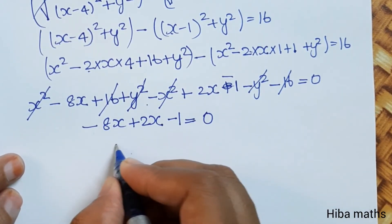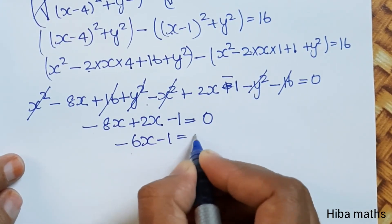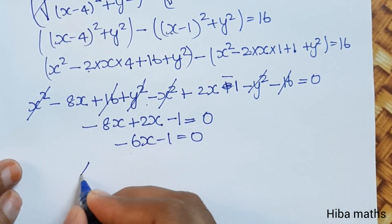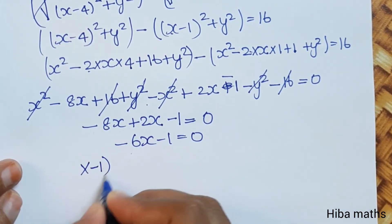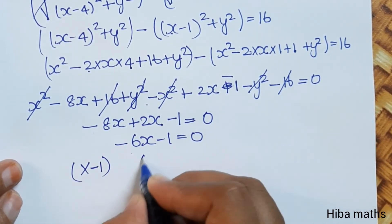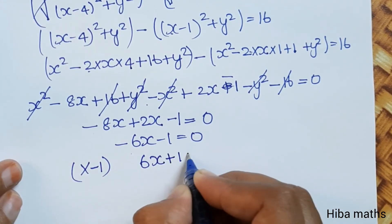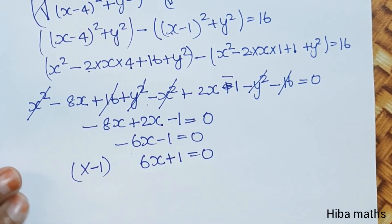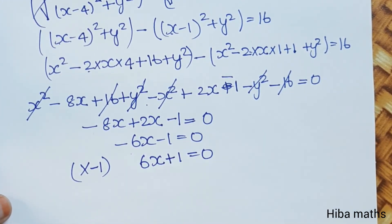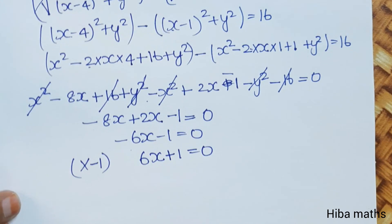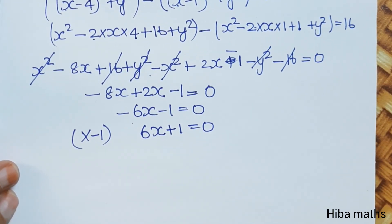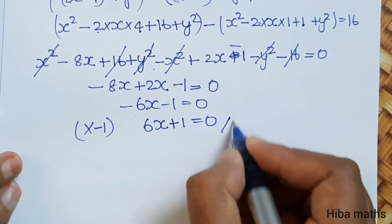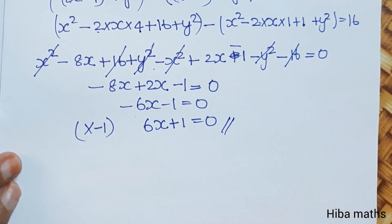Simplifying the balance: -6x - 1 = 0, so x = -1/6. This is the Cartesian equation for the second case. Thank you so much for watching. Bye-bye.